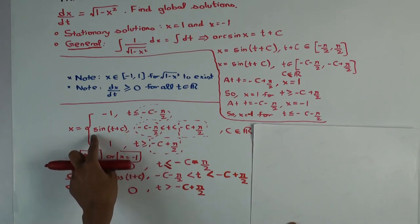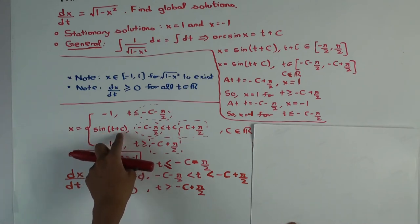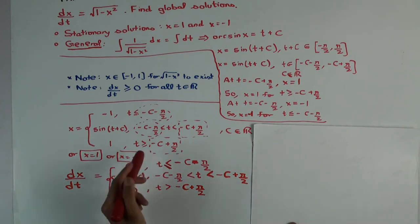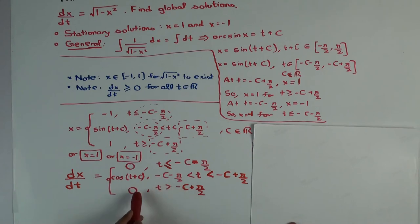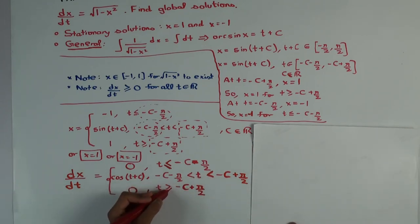Similarly, for the boundary point -c + π/2, shared between the second and third definitions: the function is continuous. The right-hand limit and value are 1; the left-hand limit — plugging -c + π/2 into sin(t + c) — gives sin(π/2), which is 1. For the derivative: the left-hand derivative is cos(t + c) evaluated at that point, giving cos(π/2) = 0. The right-hand derivative is also 0. So they agree, and the derivative is 0.